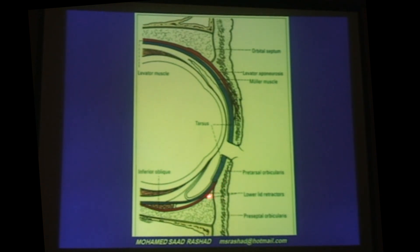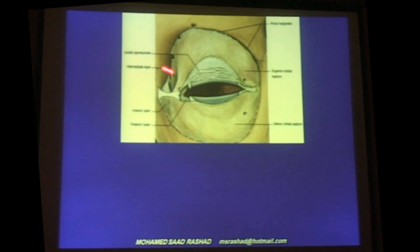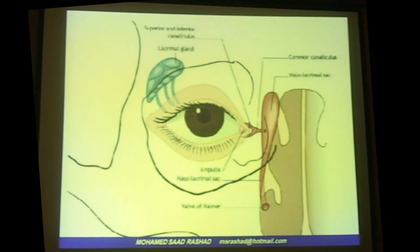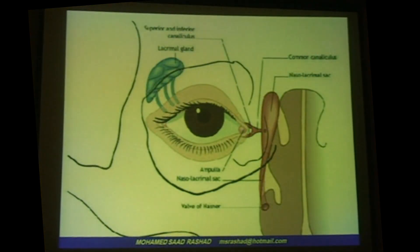In the lower lid, the lower lid retractors and the orbital septum attach to the lower border of the tarsus, and this makes a little difference between both eyelids. The orbital septum in the area of the lacrimal sac is deficient — it's only covered by the medial palpebral ligament. You have to take care in the superior lateral part of the lacrimal gland and the medial part of the lacrimal sac.